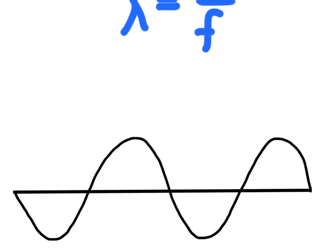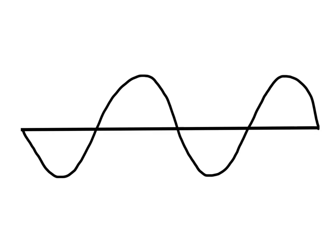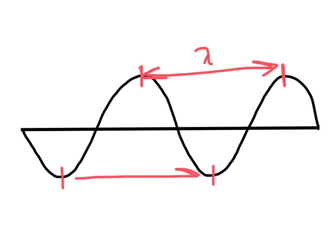When we're talking about wavelength, we're talking about the distance of one cycle. We can measure from a crest to another crest — that would be equal to one wavelength. Or we could also do trough to trough; those would also be the same thing. Now when we're talking about frequency, we're talking about how many of those wavelengths will pass by a given point in one second.